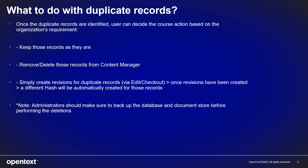Once the duplicate records are identified, the user can decide the course of action based on the organization's requirements. They can keep those records as they are, remove or delete those records from Content Manager, or simply create revisions for duplicate records via Edit Checkout. Once revisions have been created, a different hash will be automatically generated for those records. Please note that administrators should make sure to back up the database and document store before performing any deletions.